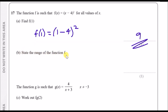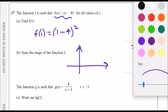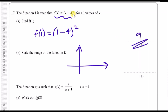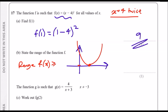Part b asks us to state the range of function f. To find the range, we need to see how the graph looks and what y values it takes. Since the function is (x minus 4) squared, it touches the x-axis at x equals 4 and bounces — it's a quadratic. The lowest value on the y-axis is 0 and the highest is infinity, so the range of f(x) is greater than or equal to 0.